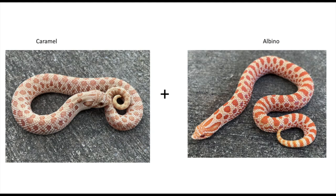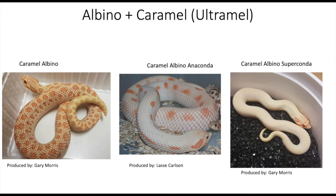Next up we have the caramel and albino combination. When you combine these you get what's called an Ultramel. So we have the ultramel, the ultramel anaconda, and then the ultramel superconda.